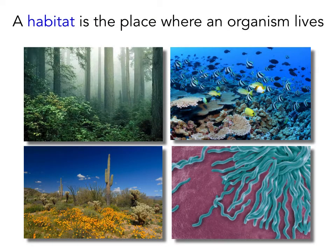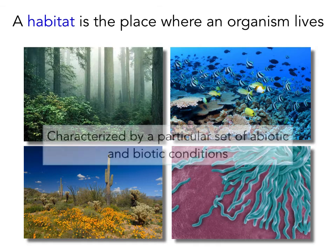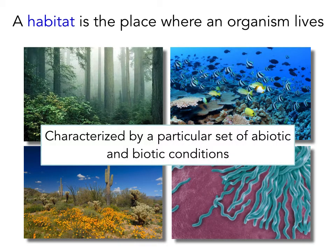To introduce this way of thinking, let's first define a couple of terms. A habitat is a place in the environment that is inhabited by a particular species of organism. It's the place where the organism lives, and encompasses all of the physical, chemical, and other environmental factors that surround the species. A habitat is made up of a set of physical factors like soil, moisture, temperature, and light, as well as biotic factors — other organisms — such as the availability of food, the presence of predators, competitors, etc.